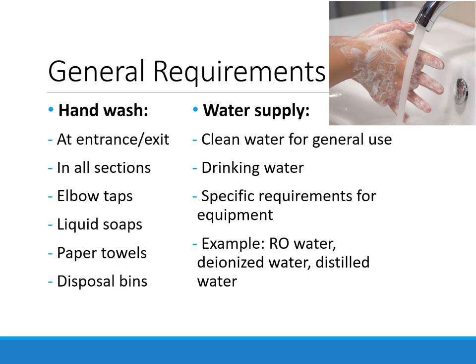Water supply: there must be three kinds of water supplied in the laboratory. The first is clean water for general use, with a continuous supply for use in the laboratory, in the washing and cleaning areas, and in the toilets. The second is drinking water. The third is special water as per the specific requirements for equipment, such as RO water, deionized water, double deionized water, and distilled water.